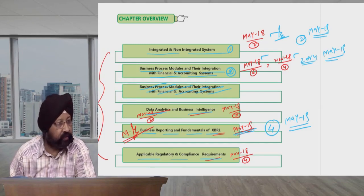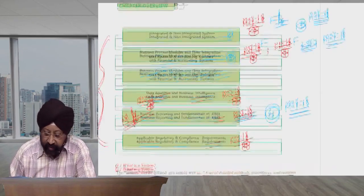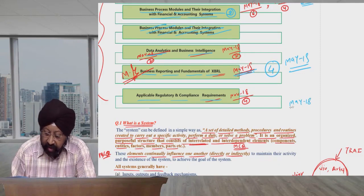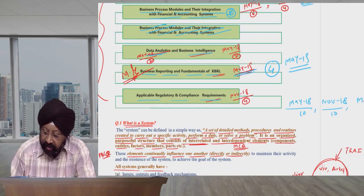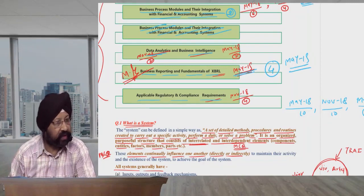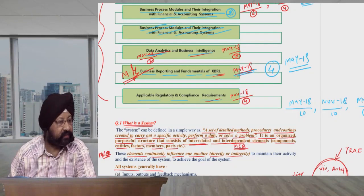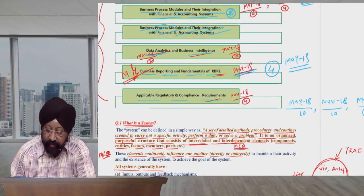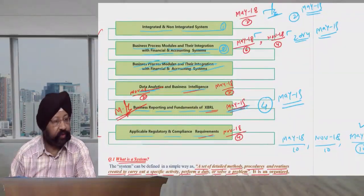Chapter 1 had 12 marks. This chapter is how many marks? 10 marks. If you look at the analysis, May 18, 10 marks were asked. November 18, 10 marks were asked. May 19, we will expect that 10 marks come from this chapter. We will expect questions on XBRL and other topics can come.